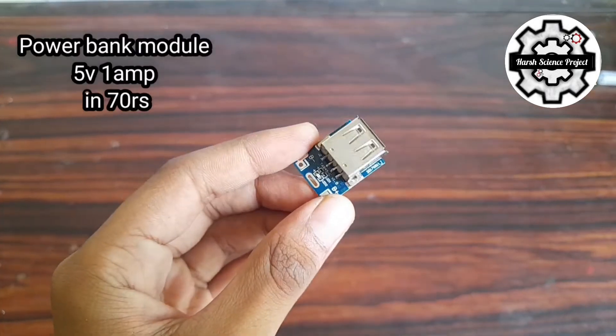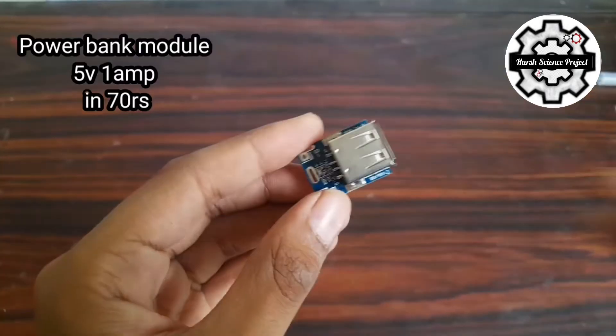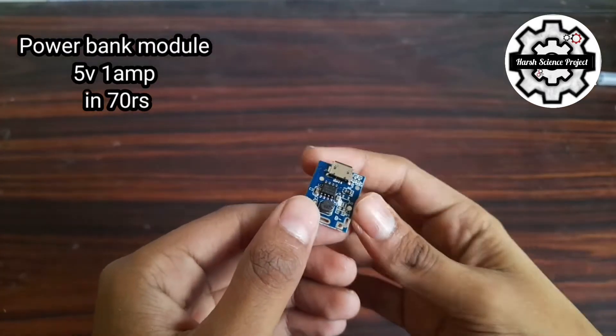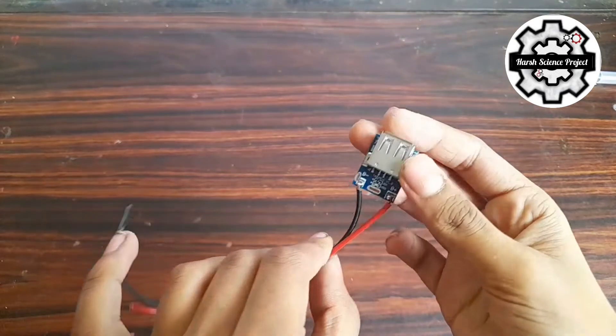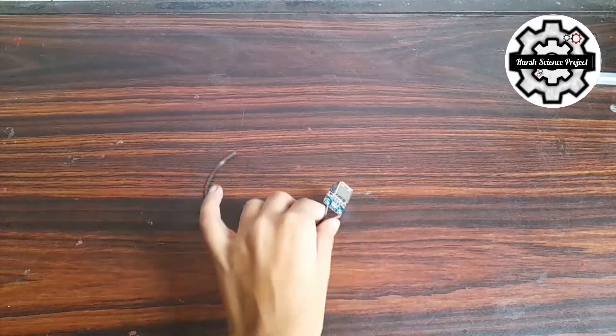To make a 1-Ampere 5-Volt powerbank module, we are going to need soldering wire, which will be 60-70 Rs.